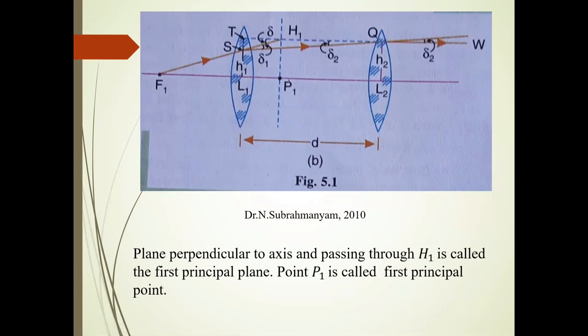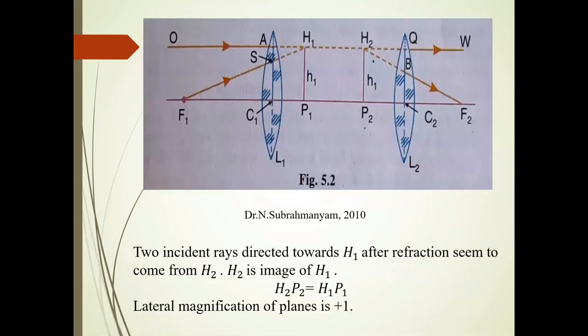The two incident rays OA and F1S are directed towards H1 and seem to emerge from H2 point. They are directed towards this H1 point and seem to emerge from this H2 point.